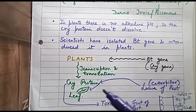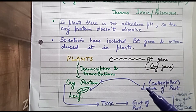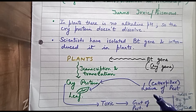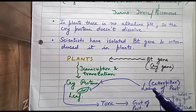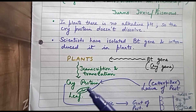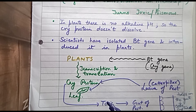After cry protein is produced, suppose any insect — the caterpillar, which is the larva of a pest — comes to eat the plant. It can eat the leaf, stem, fruit, or flower. So suppose the larva, which we call the caterpillar, is eating the leaf of any plant.